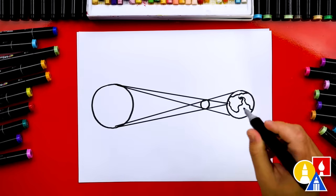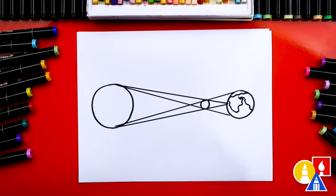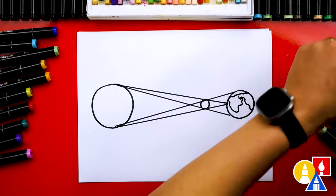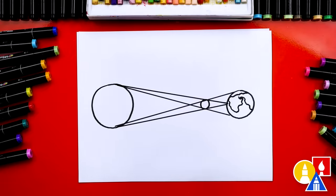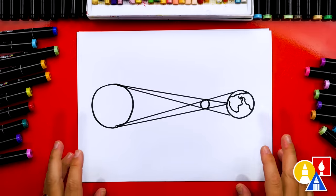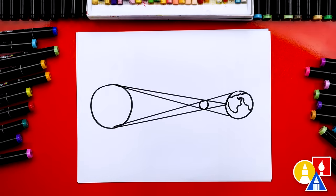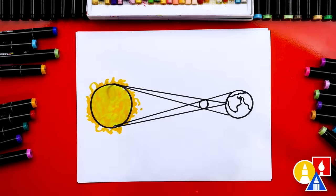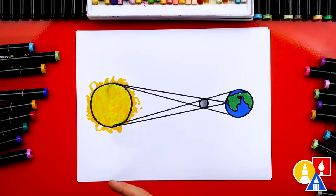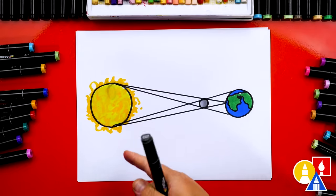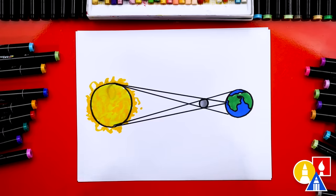Now we can add blue and green to our earth, then we can also color our moon gray and let's also color our sun. This part will speed up but at the end you can pause the video and take time to color your drawings. I've finished coloring my sun, moon and earth. I also added some texture to my sun with an orange marker and the sun rays coming off.